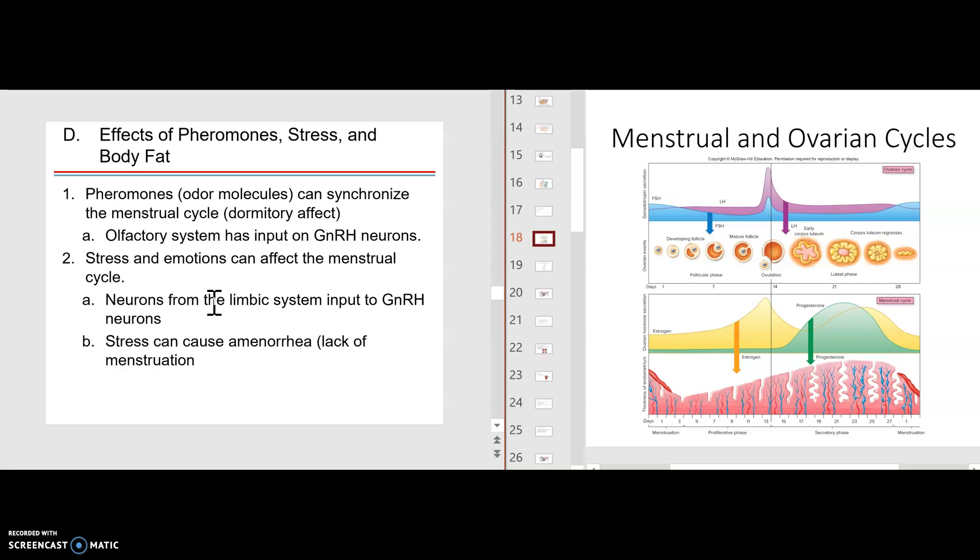Two females are staying in a dormitory room. Let's say they're freshman year. One had a menstrual period not at the same time as the other female. But for some reason, after a while, they both start having the menstrual periods at the same time. It appears that pheromones are the cause for that, this dormitory effect.